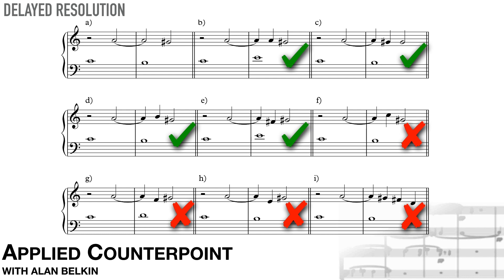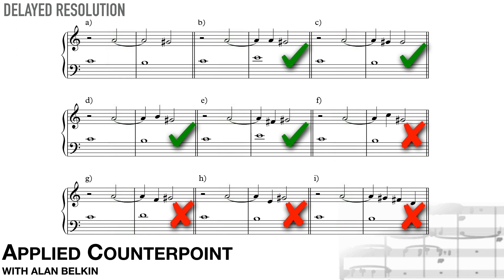Most counterpoint texts therefore prohibit this. Here we'll allow it only if all the suspensions in a given exercise behave the same way — meaning, in effect, considering the music to be in 4-4 time, not 2-2. If we feel the beat slower in 4, there's no sense of rhythmic conflict. Note that suspensions in fifth species are normally prepared by a half note; a quarter note preparation would feel syncopated. As in third species, we'll avoid prominent repeated motives for the same reason — they create obligations that the student is not ready to deal with yet. Note that the dotted note rhythm and suspensions in general could be considered motives, but they're so common that they don't attract much attention.